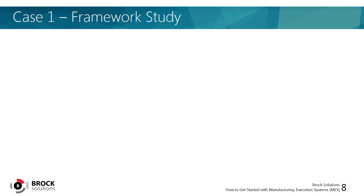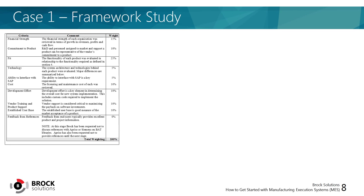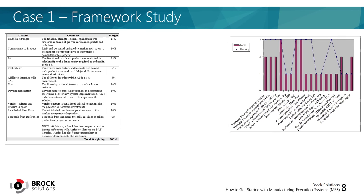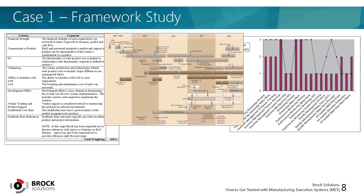Getting back to the specific manufacturer, through the framework study we helped them answer a lot of their initial questions. For vendor selection, we developed an evaluation criteria and weighting matrix. We looked through all the obsolete legacy systems and helped them determine what functions they required in the future state, then mapped where those functions should reside — be it the controls layer, MES, ERP, or other external systems. We also looked at priorities and risk factors for replacing these systems, helping create a roadmap that placed high-priority, low-risk items near the beginning.